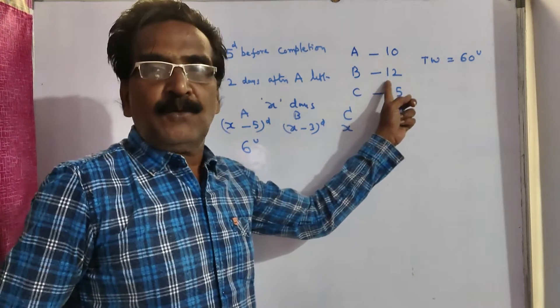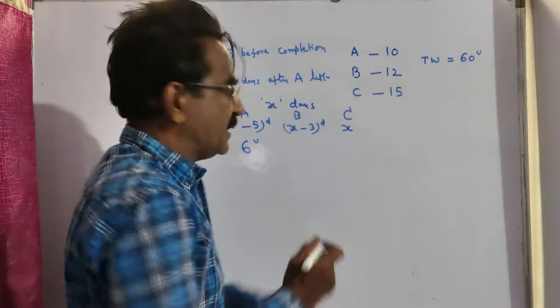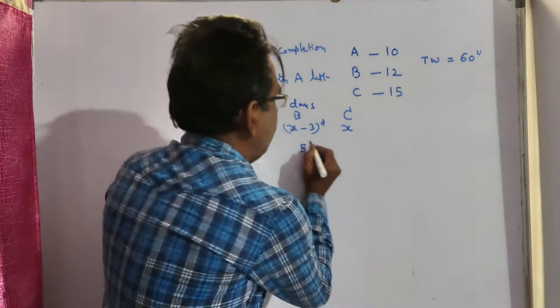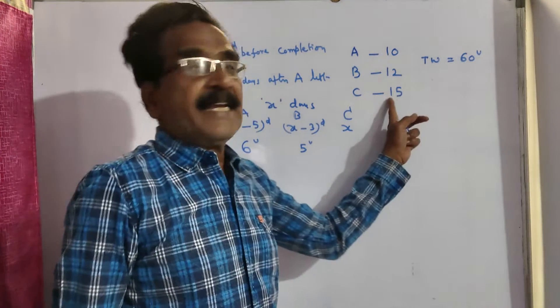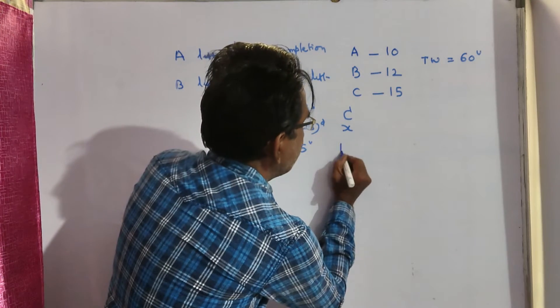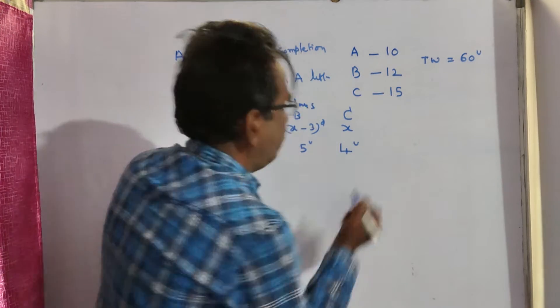Whereas B can do 5 units of work per day, 12 fives are 60. Whereas C can do 4 units of work per day, 15 fours are 60.